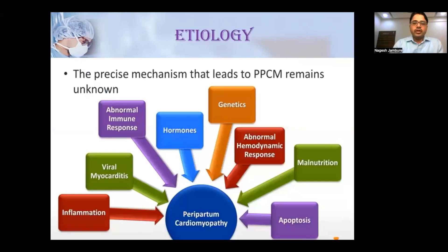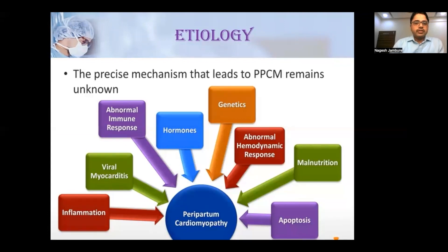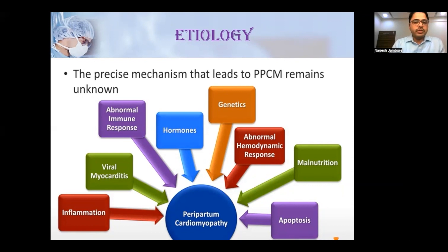The etiology of peripartum cardiomyopathy involves multiple mechanisms due to oxidative stress in cardiomyocytes causing angiogenesis impairment. Multiple etiological factors include inflammation, viral myocarditis, abnormal immune response, hormonal factors such as increased prolactin levels, genetic predisposition, abnormal hemodynamic response, malnutrition including zinc and selenium deficiency, and apoptosis. This oxidative response is perpetuated by all these etiological factors.